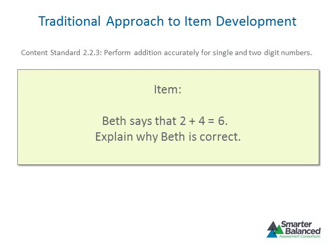As an example, the content of this item appears aligned with a content standard that focuses on addition. However, the information elicited from the student's response does not say much about a student's ability to add. This happens in part because the item requires the student to describe in words how he or she knows 2 plus 4 is equivalent to 6. The student may be able to add the two digits but may have difficulty expressing his or her understanding in writing.